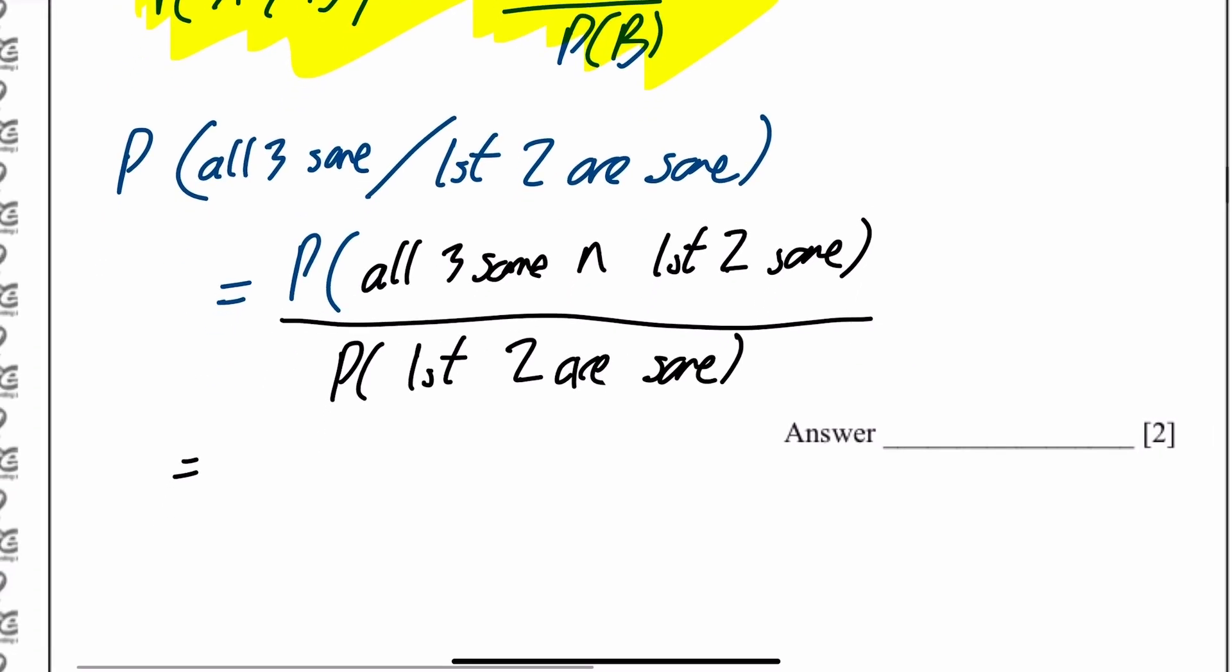Now, this top line, if you think about it, I've told you that all three are the same, and the first two are the same. That's the same as just being all three are the same. So that's what we worked out in part two, and then divided by what we worked out in part one, which was the first two are the same.